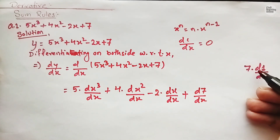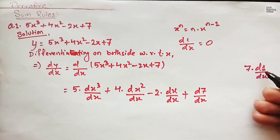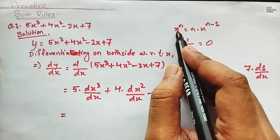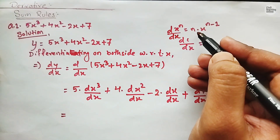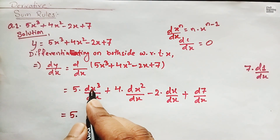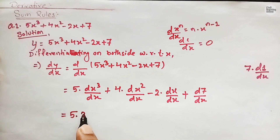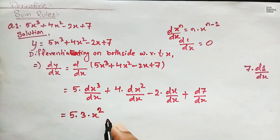So ultimately d(7) upon dx will be 0. Now we apply the rule: derivative of x to the power n with respect to x is n times x to the power n minus 1. For the first term, in place of n we have 3, so we write 5 times 3 times x to the power 3 minus 1, giving us x to the power 2.